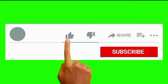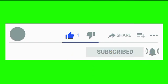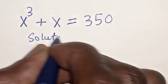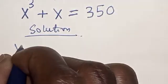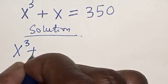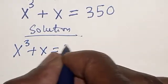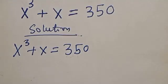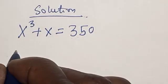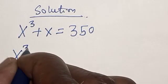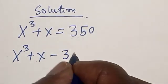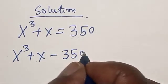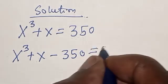Solution: we have the given equation s raised to power 3 plus s is equal to 350, and we rearrange it to s raised to power 3 plus s minus 350 is equal to 0.